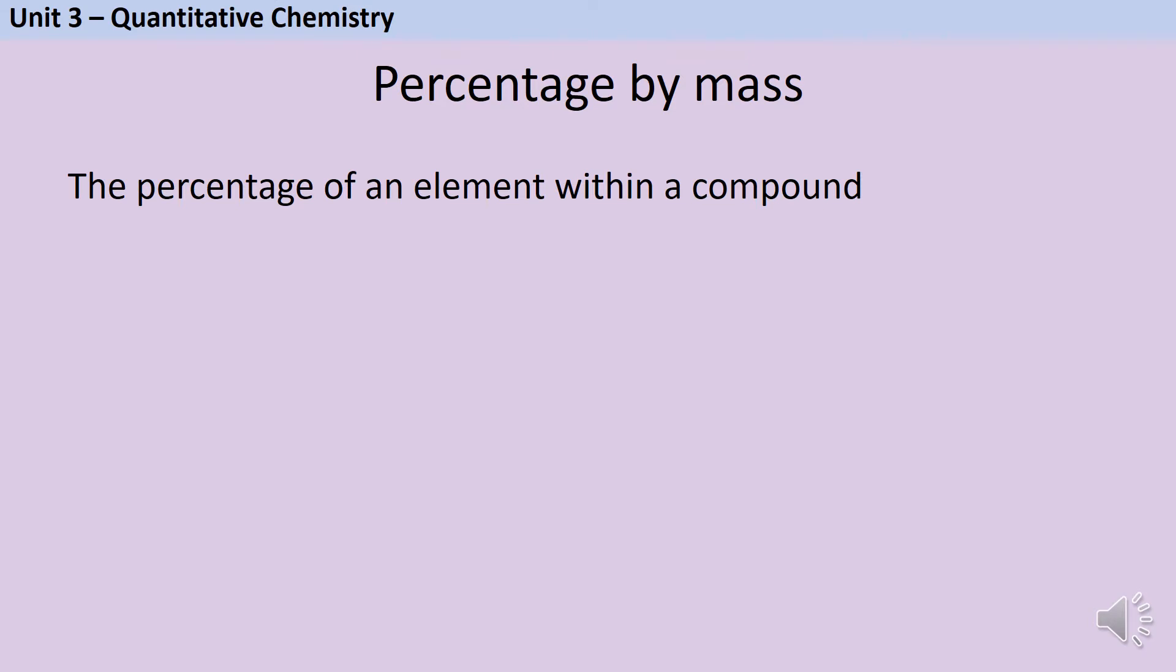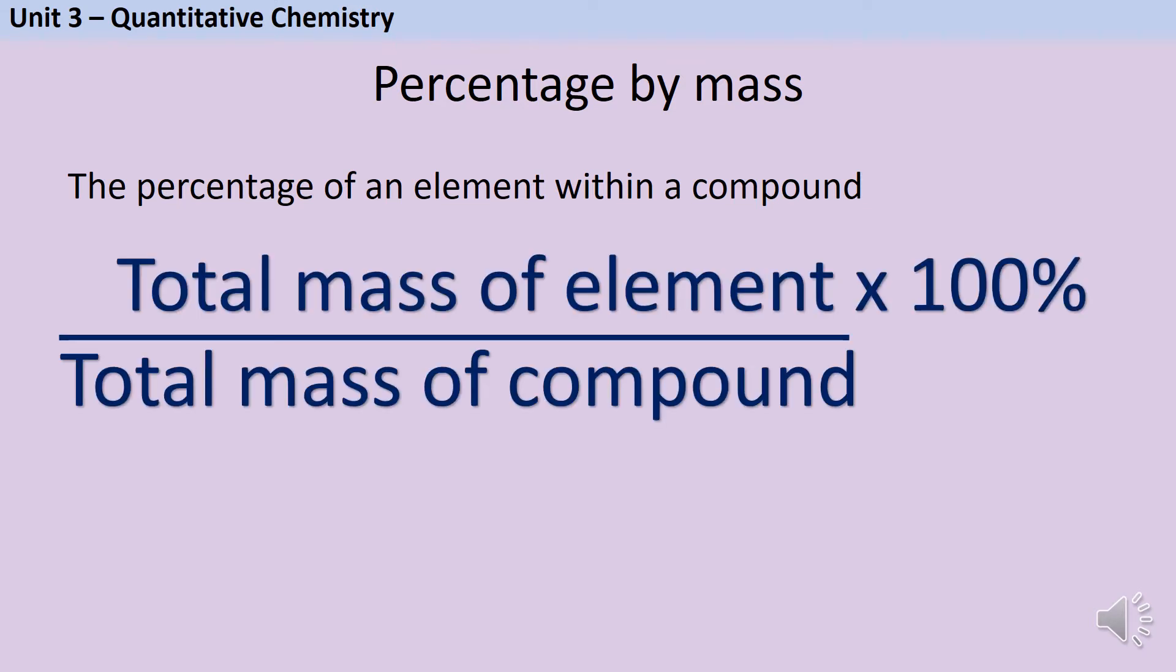So as the name would suggest, to work out the percentage by mass of an element within a compound we need to know what the mass of the element is and we divide that by the mass of the compound and then multiply the whole thing by 100% to turn it into a percentage.